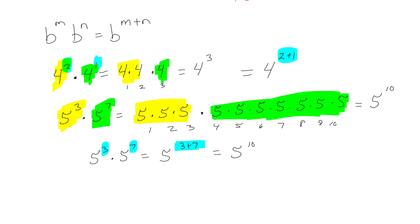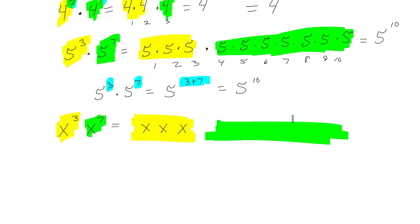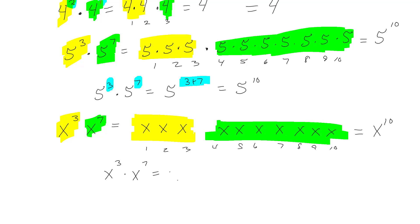What can make this scarier is if we put x's in there. Like x cubed times x to the seventh — and you're like, oh my god, it's x's, we're all going to die. But seriously, I'm going to have three x's and then seven more x's. Counting them all up, I have ten x's — so I still get x to the tenth. Or using the formula: x cubed times x to the seventh equals x to the three plus seven, which is x to the ten.